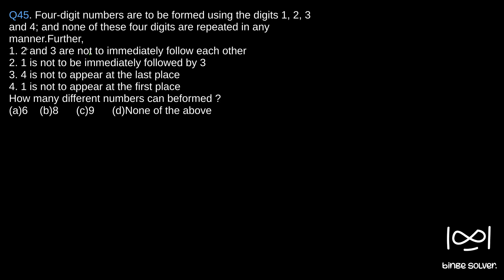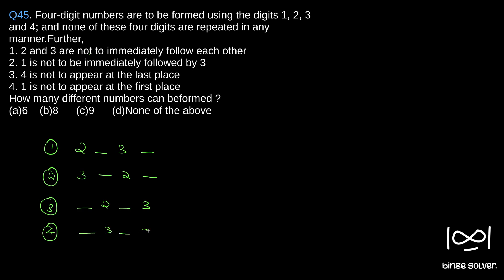We'll apply each condition. The first condition is that 2 and 3 are not to immediately follow each other. So we'll write down all such possible combinations. One possible combination is where 2 and 3 are separated; interchanging 3 and 2 also gives a case. Then interchanging again gives two-three arrangements. So these are all the cases where 2 and 3 are not immediately following each other — meaning '2,3' or '3,2' adjacent must not appear.